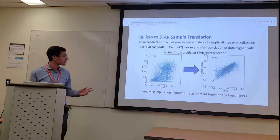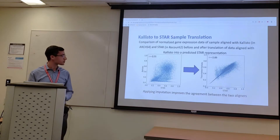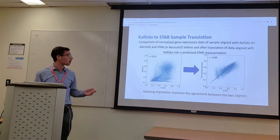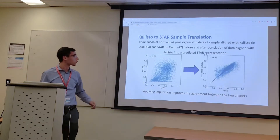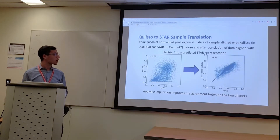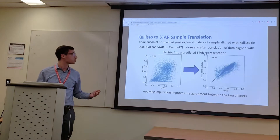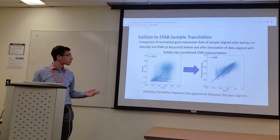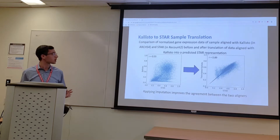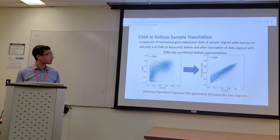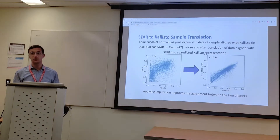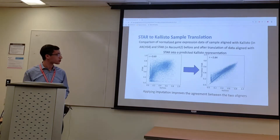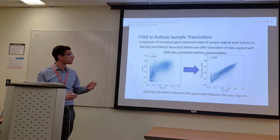These are individual sample results. This is a side-by-side comparison of a sample's normalized gene counts aligned with STAR on the x-axis and Kallisto on the y-axis, before and after the Kallisto alignment was translated into a predicted STAR representation. As you can see from these two scatter plots, translation significantly improved the correlation between the two aligners. A similar side-by-side comparison shows the sample's STAR alignment translated into a predicted Kallisto representation, and again the translation significantly improved the correlation.